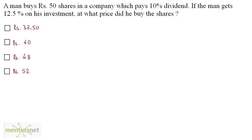The man gets 12.5% on his investment, so the interest percentage is 12.5. So 12.5 equals, now what is the formula for interest? That's the gain upon the investment. And because this is a percentage, we multiply it by 100.